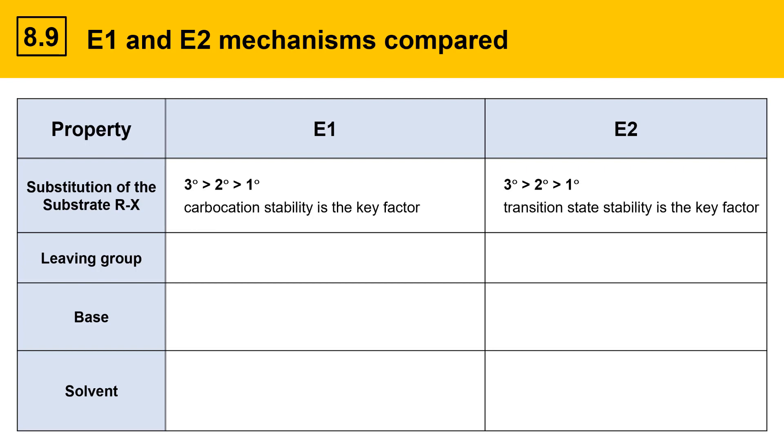For E2, the order of reactivity is the same as for E1, but the reason is different. E2 goes fastest also with tertiary, a little slower with secondary, and slower yet with primary. Here, though, the reason is that the transition state stability is the key factor.